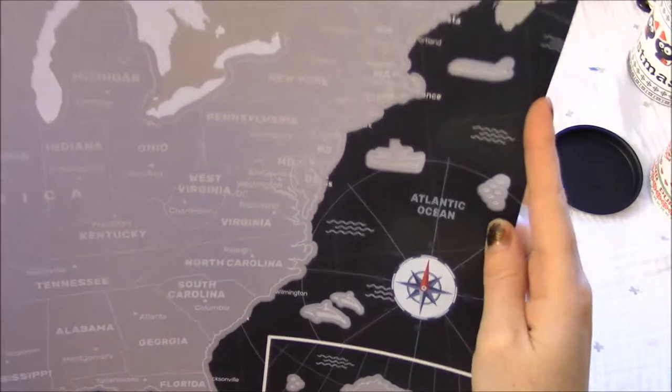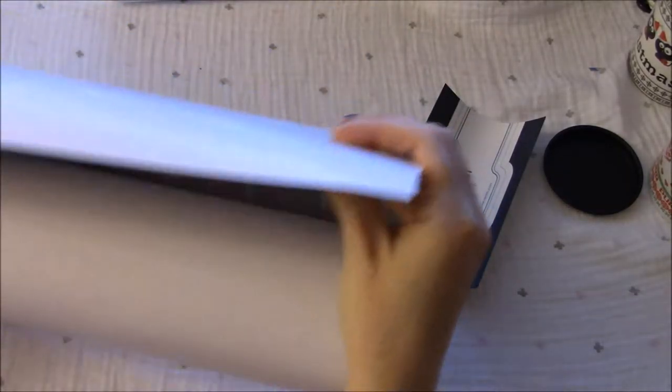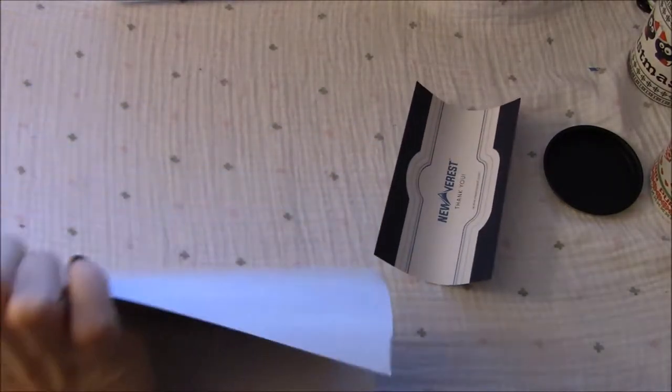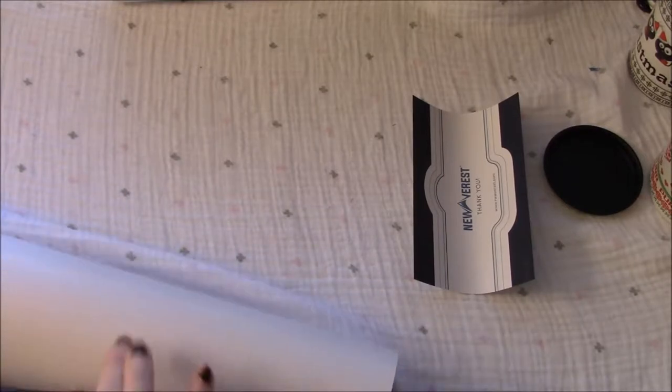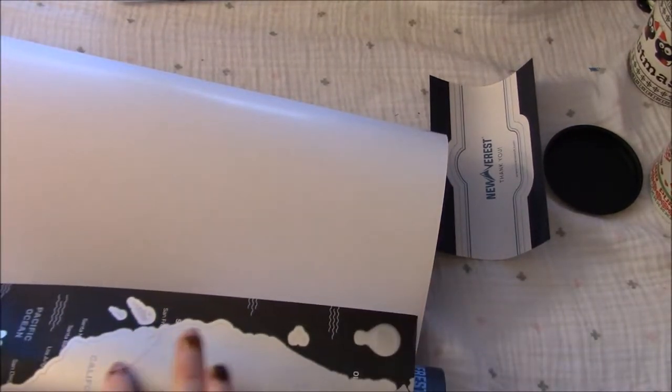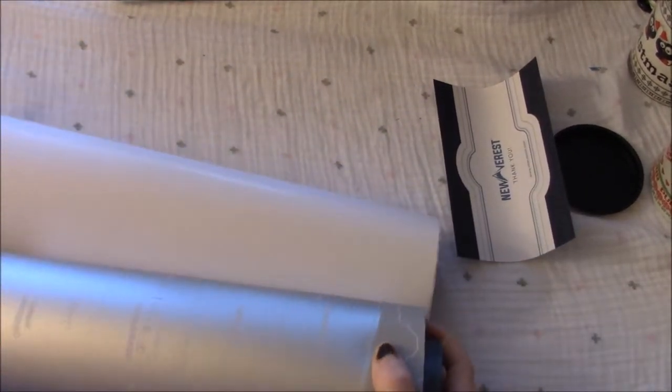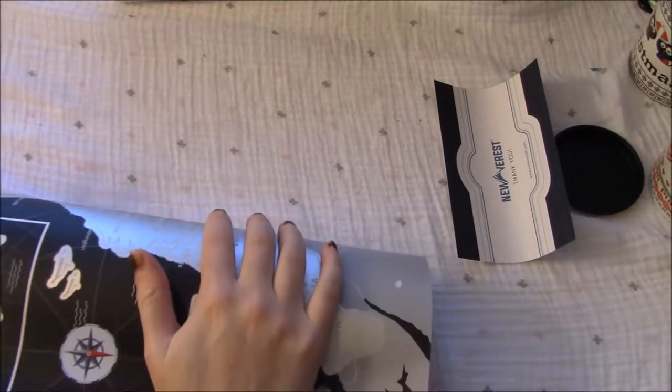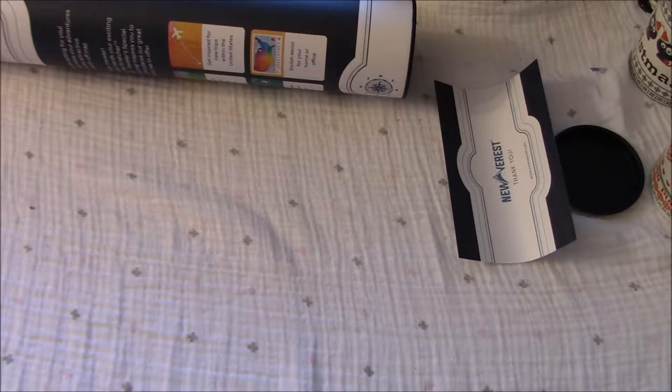Let's see if we can't get this to stay down a little bit. We'll try rolling it the other way. All right, so this one is already gonna be way easier to scratch off because it's scratched off on California a little bit while I was trying to unroll it. Maybe we'll just tuck it back in that tube while we look at the other stuff and then it'll lay a little bit flat.